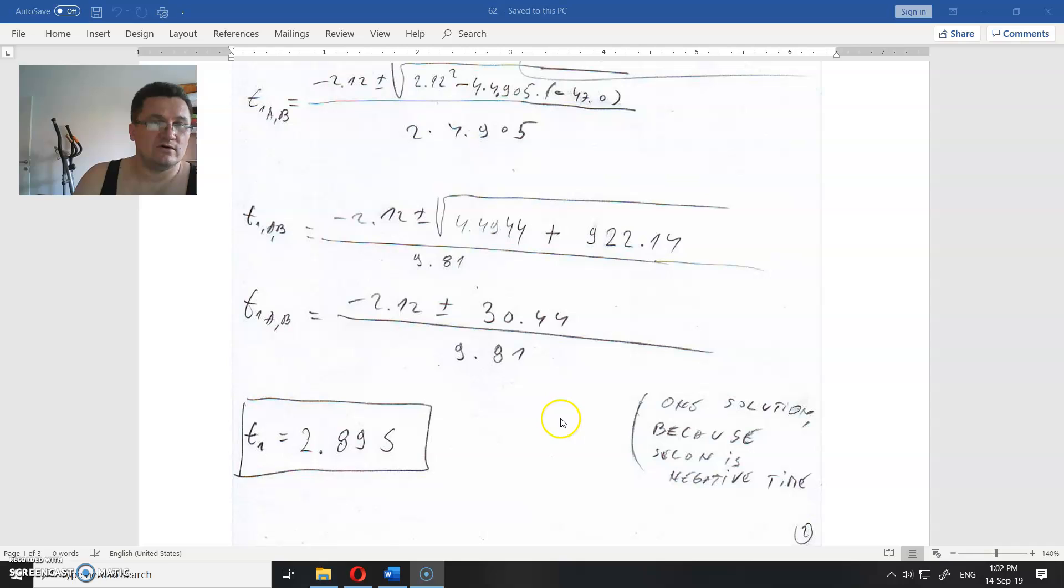We discard it because there is no negative time. This shows that mathematics gives sometimes a solution that does not exist in reality, but we as physicists should have some common sense to discard something that is not correct.